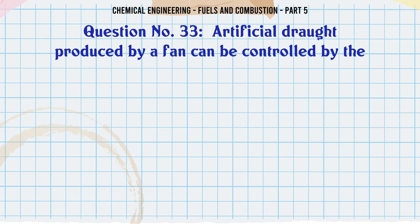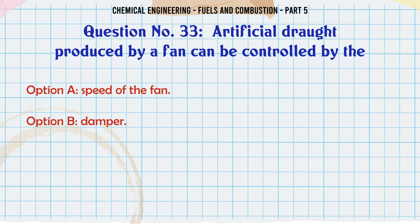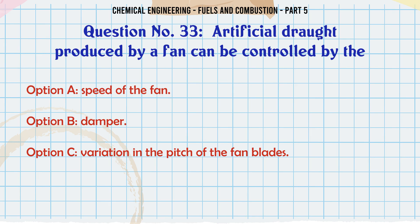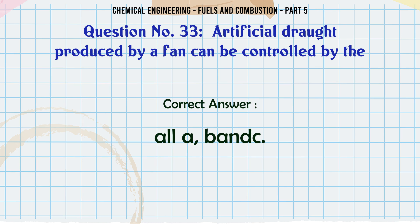Artificial draught produced by a fan can be controlled by the: A. Speed of the fan. B. Damper. C. Variation in the pitch of the fan blades. D. All A, B and C. The correct answer is all A, B and C.